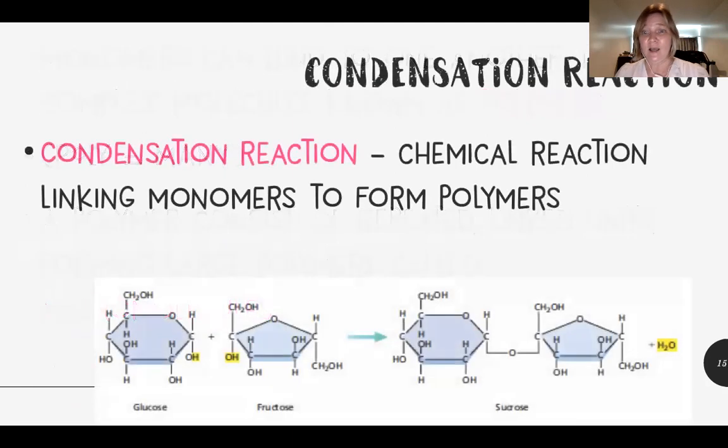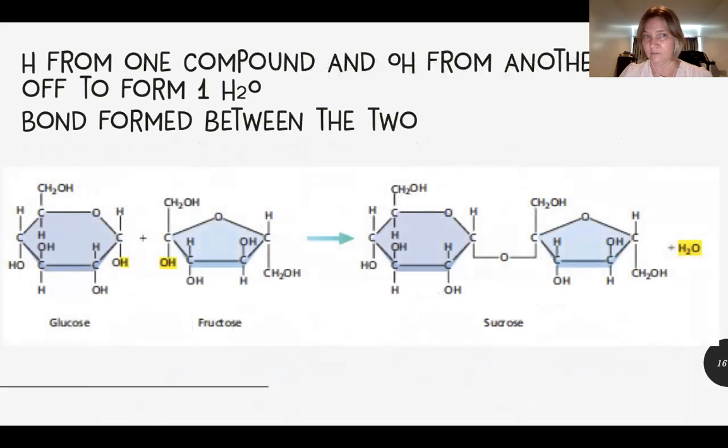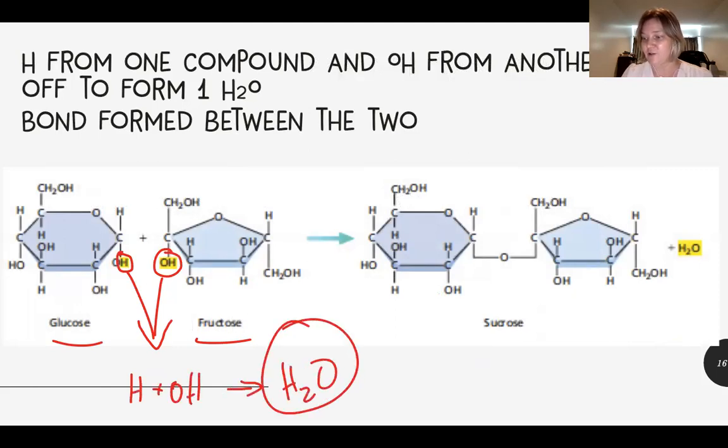So how do we put monomers together to form polymers? We do so through what's called a condensation reaction. If you know the term condensation, that is water vapor turning into liquid water. The process for this reaction is reflected in that. You've got here two monomers: glucose and fructose, which are two simple sugars. You're going to take the hydrogen from one of those and the hydroxyl from another one. So what you have left over is H and OH. Guess what that forms? H2O. There's your condensation part of the reaction.